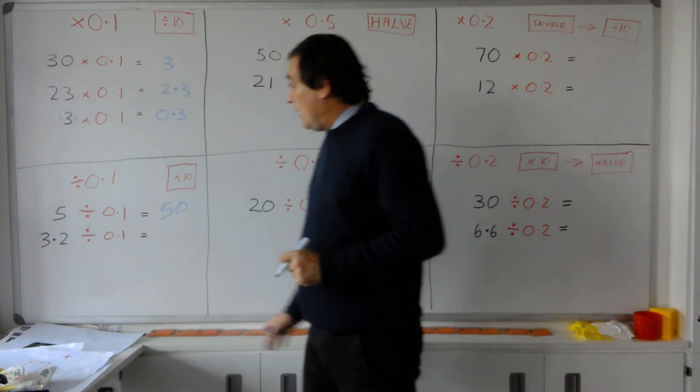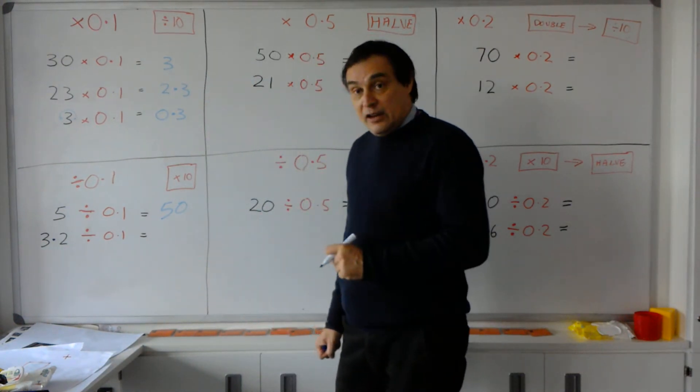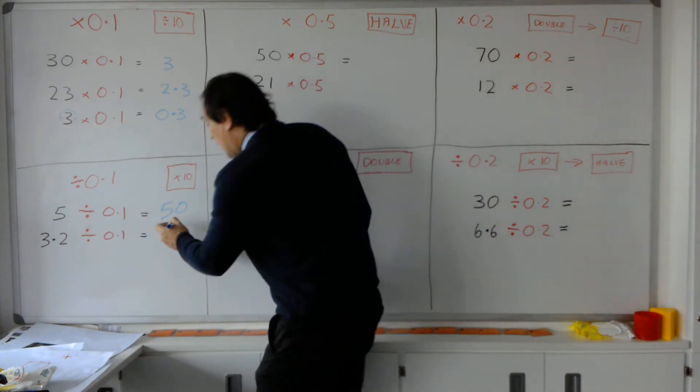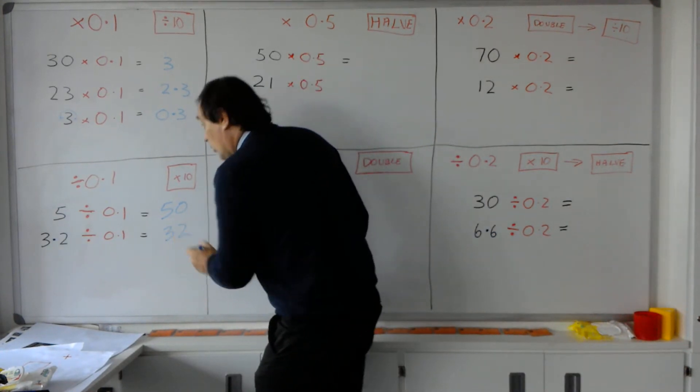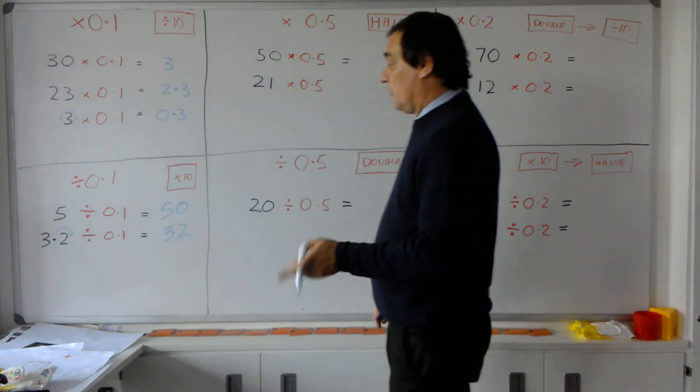In the same way, if you see 3.2 divided by 0.1, it means 3.2 times 10. So I move the decimal point, gives us 32, so I move the decimal point over there to give you 32. 3.2 divided by 0.1.